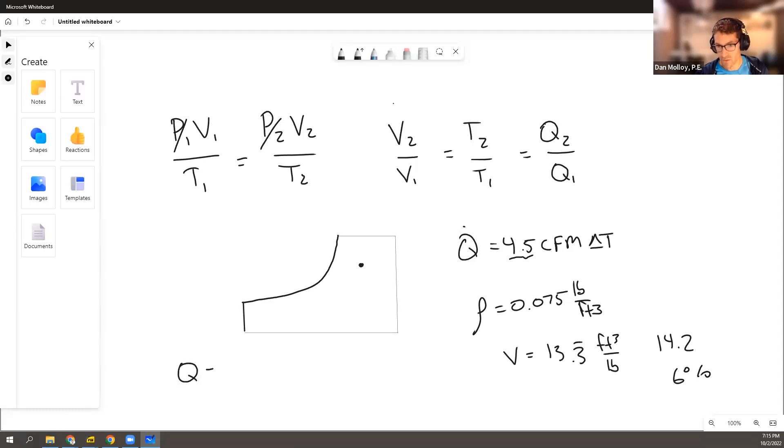Q equals M dot V, little V, specific volume. Volume flow rate equals mass flow rate times specific volume. And the specific volume is 6% bigger...